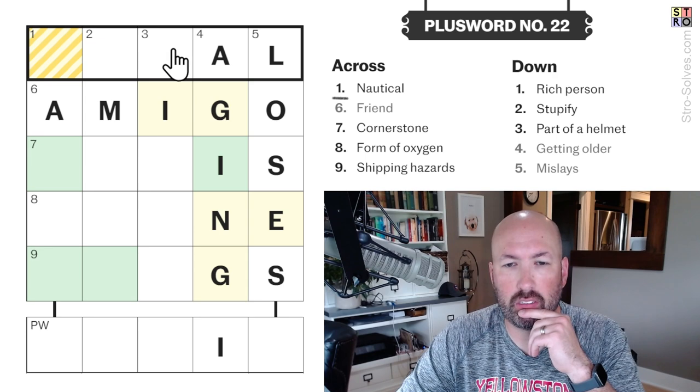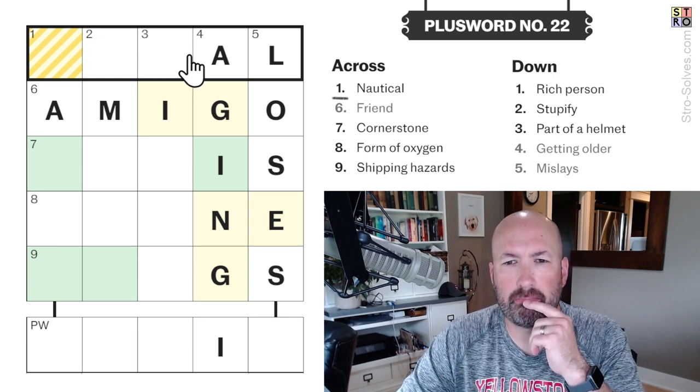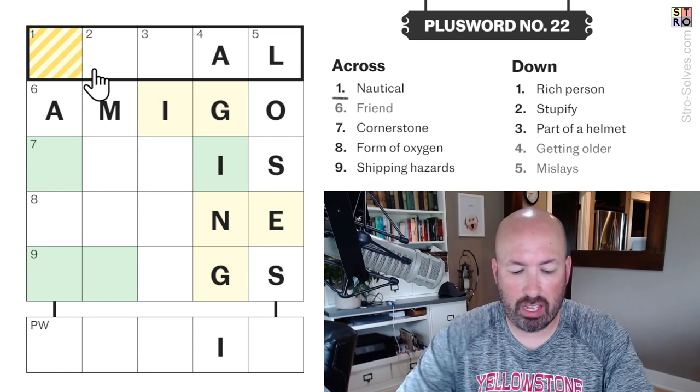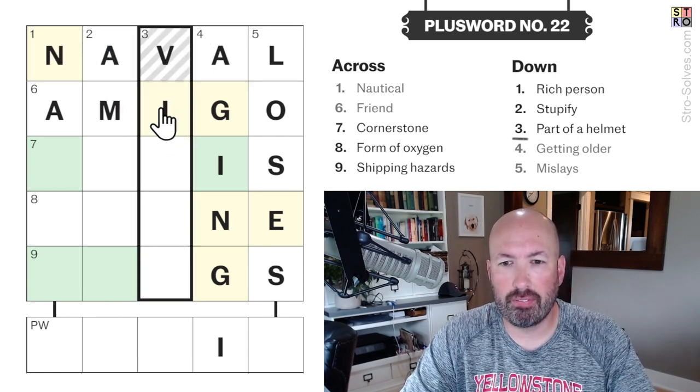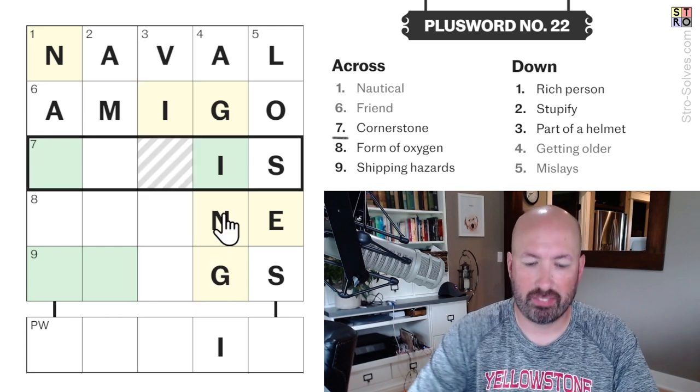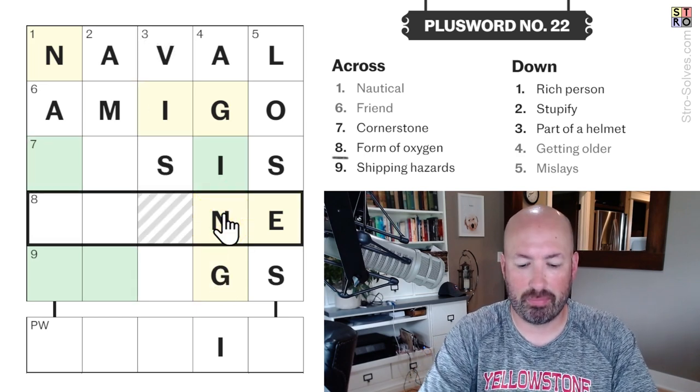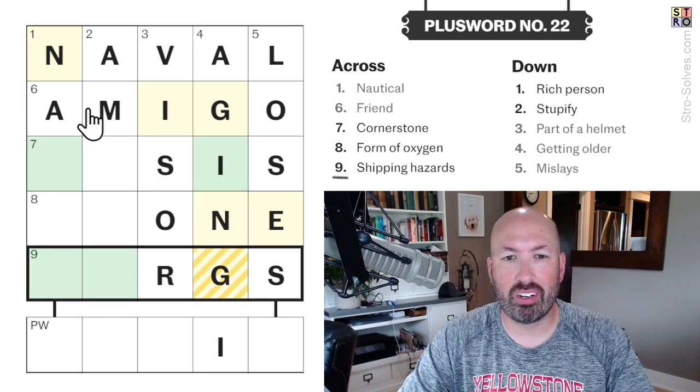Let's see, nautical. Naval! Naval, all right. With three down is a V, a visor. Visor, I was thinking it was gonna be some obscure word that I wasn't...